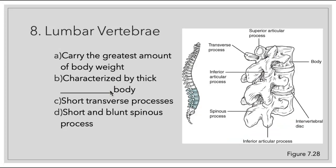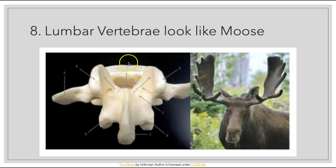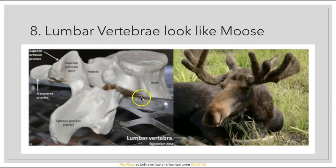Next we have our lumbar vertebrae — this region carries the greatest amount of body weight and is characterized by its thick vertebral bodies. We have short transverse processes sticking out on the side and short quadrangular blunt spinous processes. When you're trying to identify one of those vertebrae, look for something that looks like a moose or an elephant.